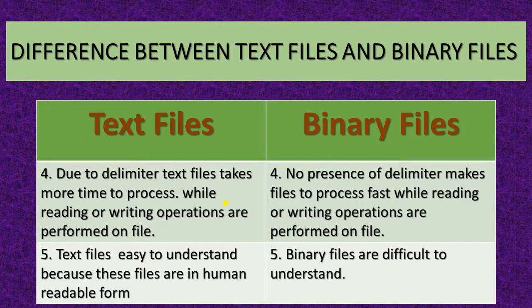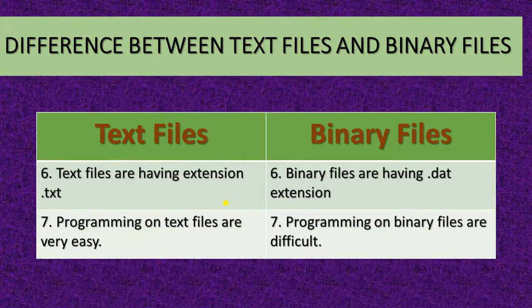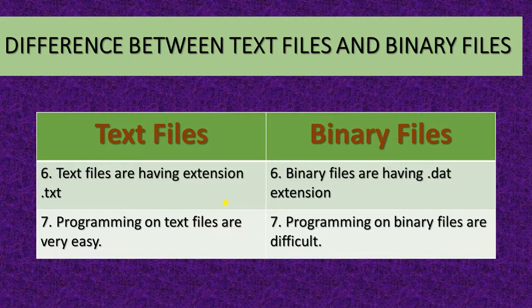Text files are easy to understand because they are in human-readable form, while binary files are difficult to understand. Text files have the extension .txt and binary files have .dat or .bin. Programming on text files is very easy, while programming on binary files is difficult.